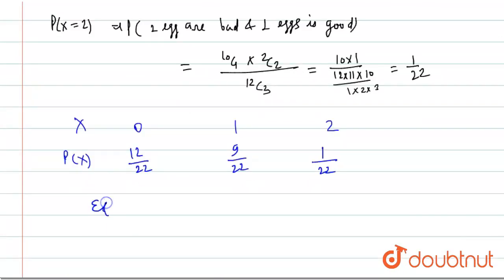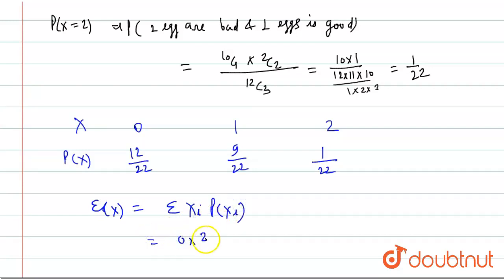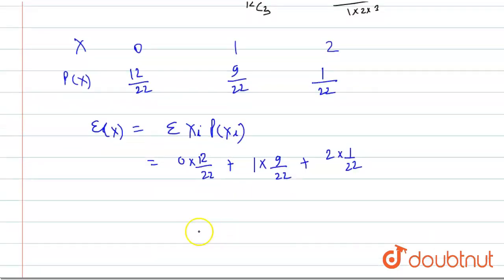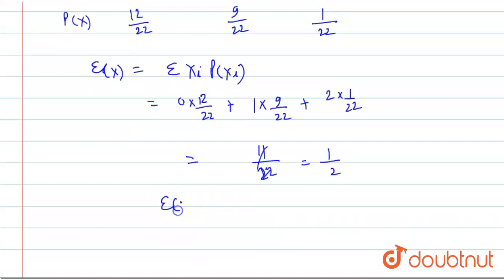Now, the mean — that is, the expected value of X — equals sigma of xi × P(xi). This is 0 × (12/22) + 1 × (9/22) + 2 × (1/22), which gives the expected value of X equal to 11/22 = 1/2.